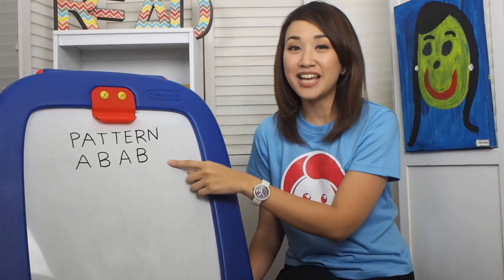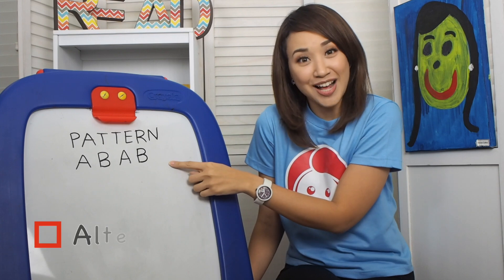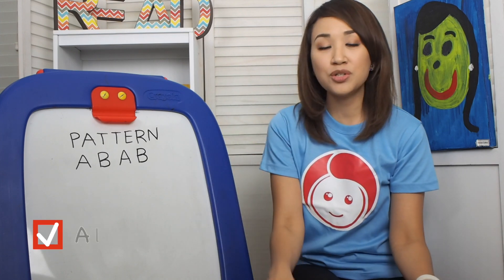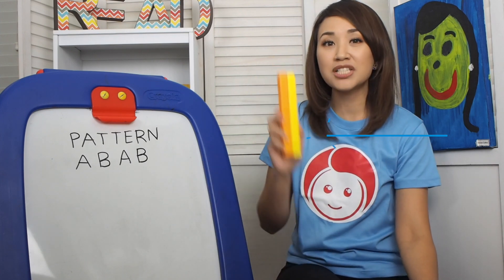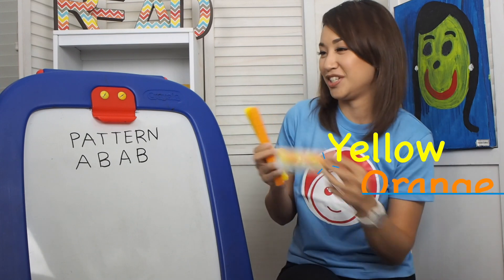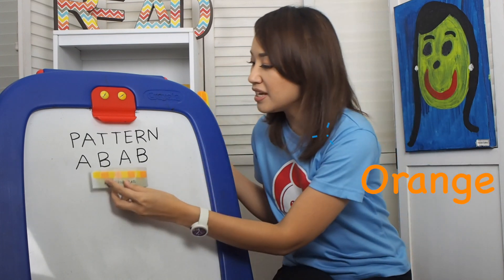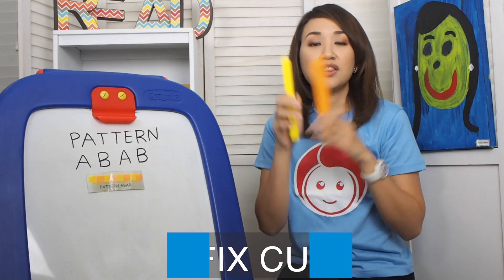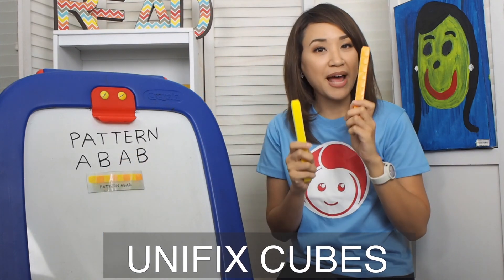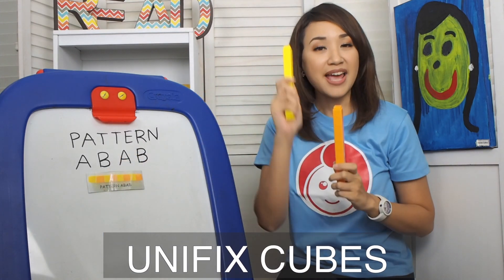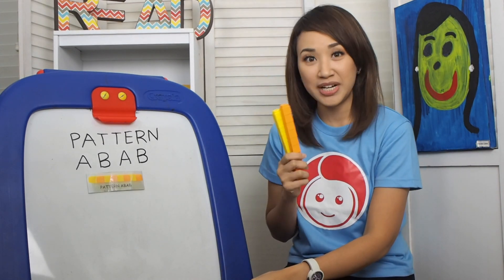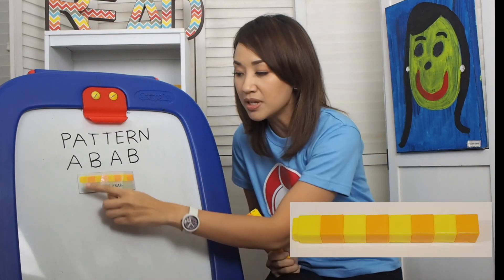Pattern ABAB is really simple. It's alternating. So in this case, we will use the colors yellow and orange. So for this activity, we will be using what you call the unifix cubes to show the patterns ABAB. So again, it's alternating, so it's really simple. Let's look at the first example.